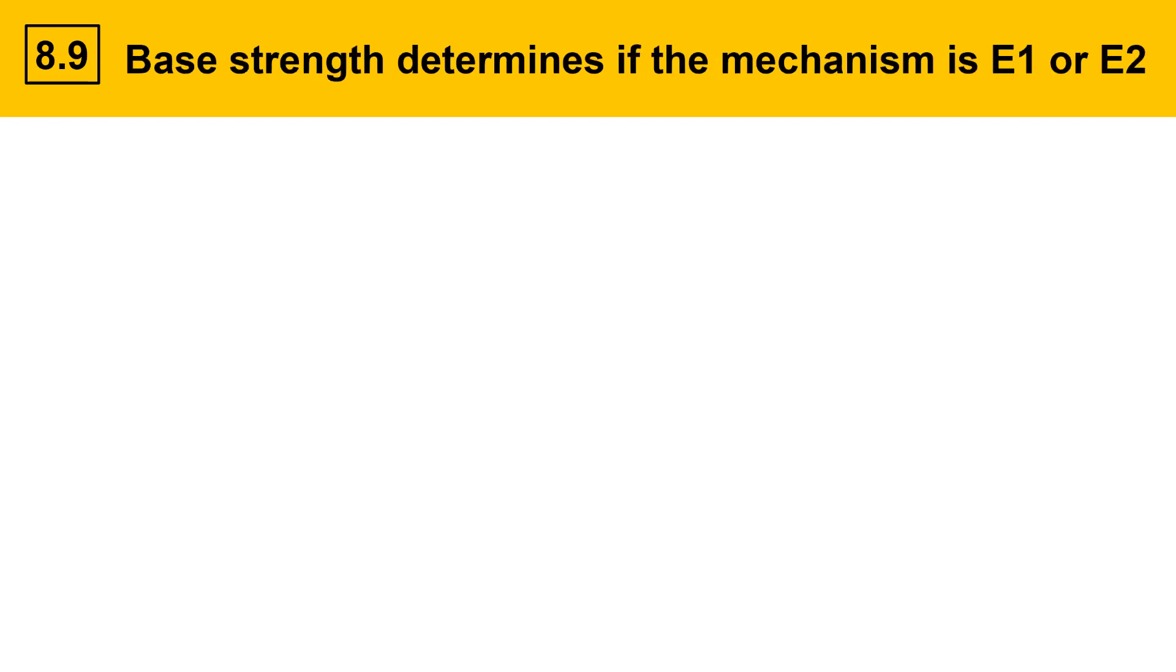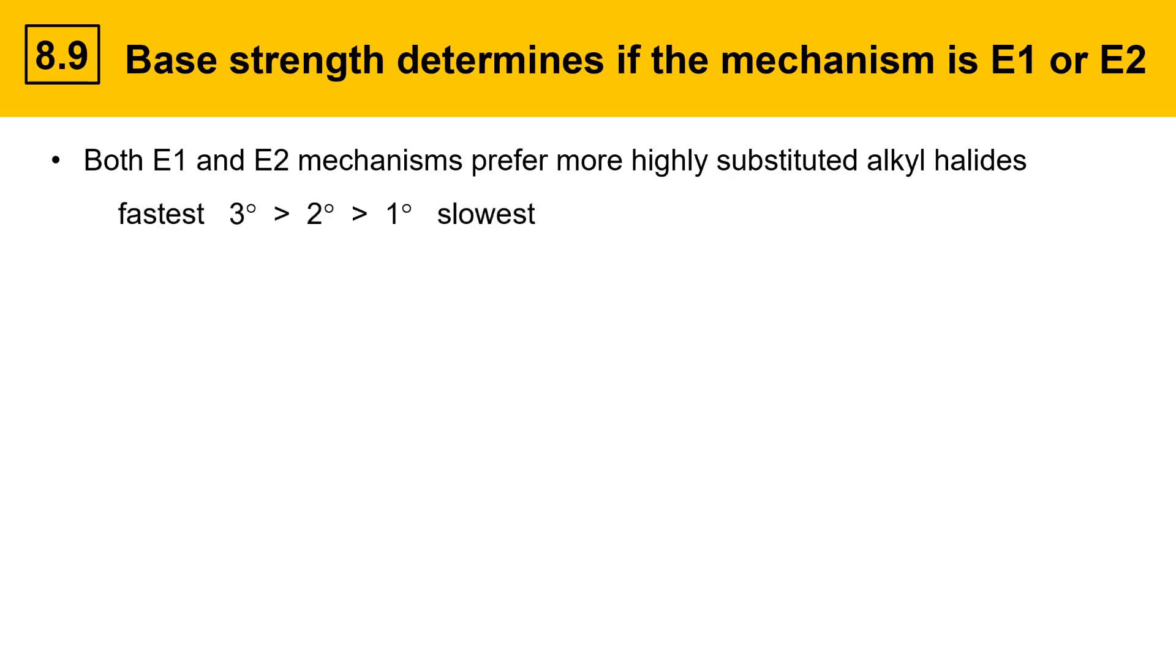An important feature of elimination reactions is that base strength determines if the reaction mechanism is E1 or E2. Both E1 and E2 mechanisms prefer more highly substituted alkyl halide substrates. They both go fastest with tertiary, a little slower with secondary, and slowest with primary. Therefore, the substitution of the alkyl halides won't distinguish between E1 and E2. They both prefer the same types of substrates.